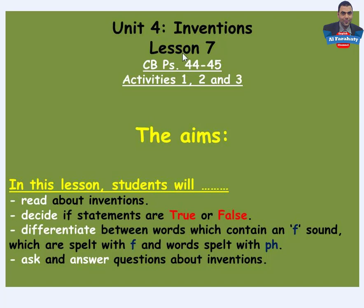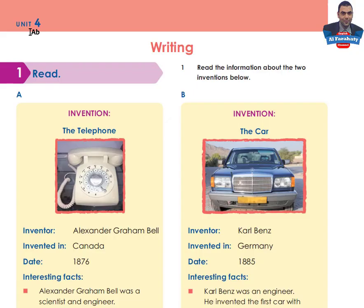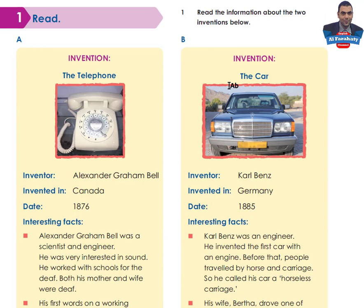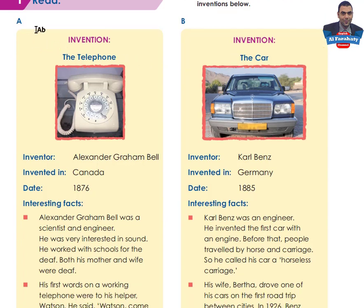Let's go to page 44 of your classbook. Unit 4, Writing Section. Activity 1, Read: read the information about the two inventions below. We have here two inventions — Invention A: The Telephone, and Invention B: The Car.